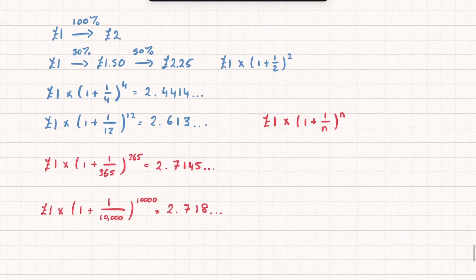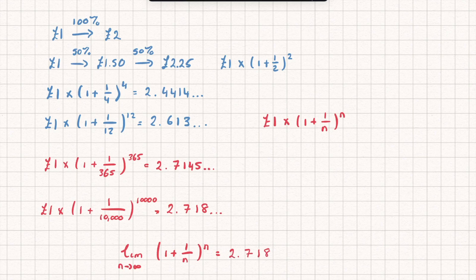And the way we would calculate this is we would say it's the limit as n tends to infinity. So I'm getting money infinitely often of 1 plus 1 over n to the power of n. And if we calculate that, if we calculate this limit, the number we get is 2.71828 and some other digits.